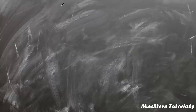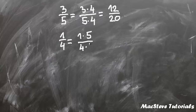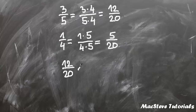In this example we will compare 3 fifths and 1 quarter. 20 is the least common multiple for 4 and 5. So 3 fifths we must multiply by 4, giving us 3 times 4 over 5 times 4, which is 12 over 20. Now we can see that 12 over 20 is greater than 5 over 20, which means that 3 fifths is greater than 1 quarter.